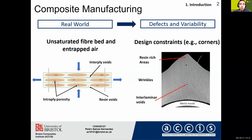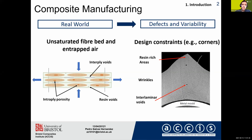During composite manufacturing, defects and variability arise in the form of unsaturated fiber bed and entrapped air — for example, interplied porosity, resin voids, and also design constraints such as corners that produce resin-rich areas, wrinkles, or interlaminar voids.